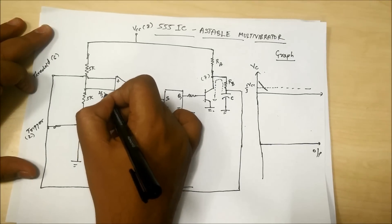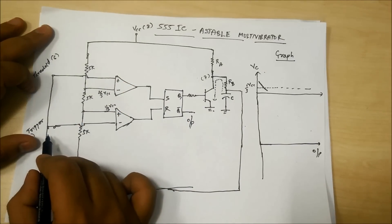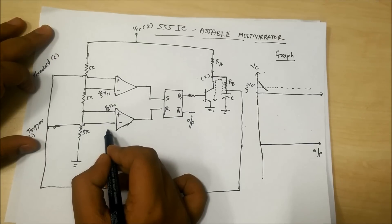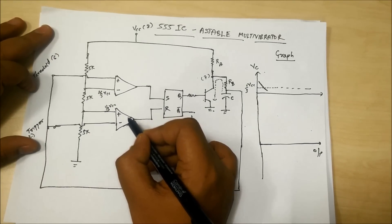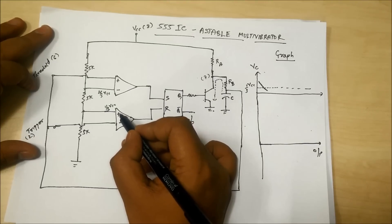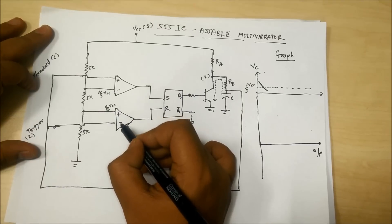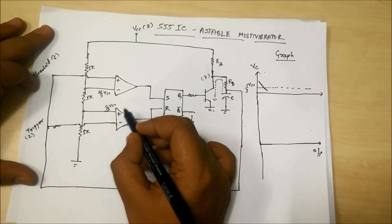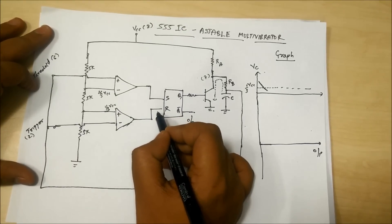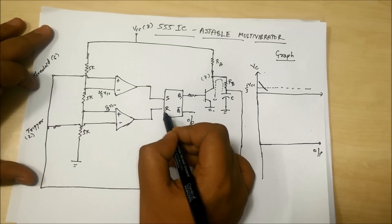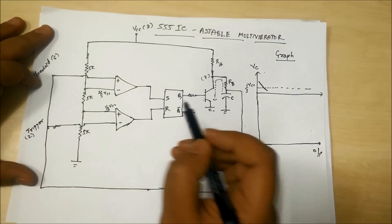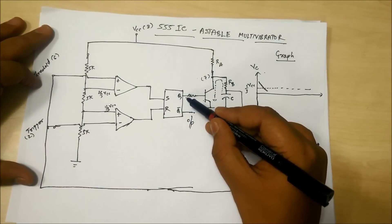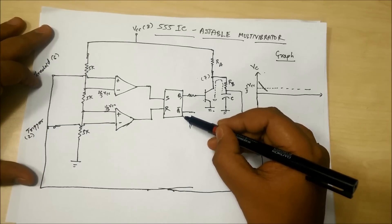When the voltage at the trigger pin is less than 1/3 VCC, the non-inverting voltage of the lower comparator becomes dominant — the positive terminal voltage becomes more than the negative terminal, so the comparator produces a high output. The moment it produces a high output, the flip flop becomes reset.